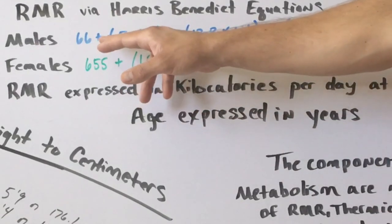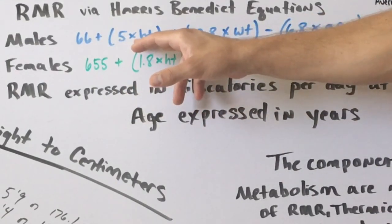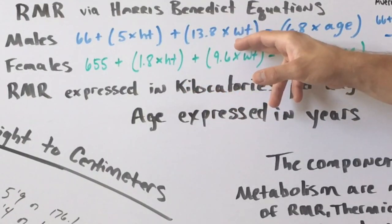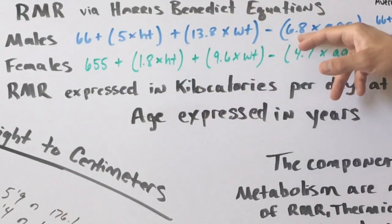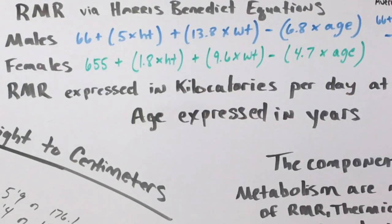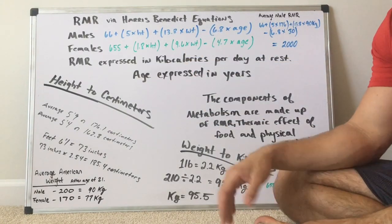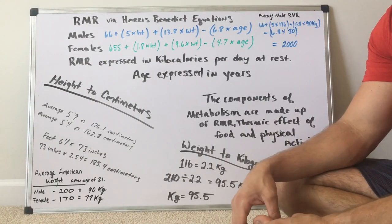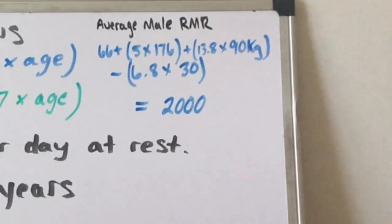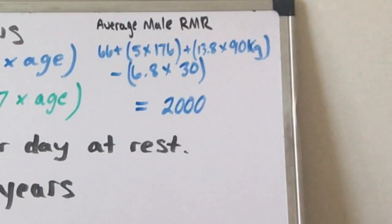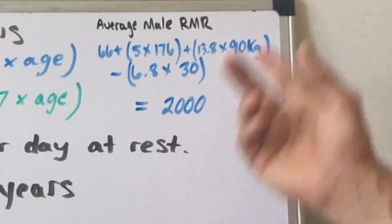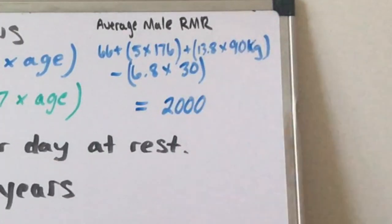For males, the Harris-Benedict equation is: 66 plus 5 times your height in centimeters, plus 13.8 times your weight in kilograms, minus 6.8 times your age. So if you're 30, just put 30 there. For females, it's 655 plus 1.8 times your height, plus 9.6 times your weight, minus 4.7 times your age. Looking at the average American man: 66 plus 5 times 176, plus 13.8 times 90 kilograms, minus 6.8 times 30 — at age 30 — we get 2,000 calories.